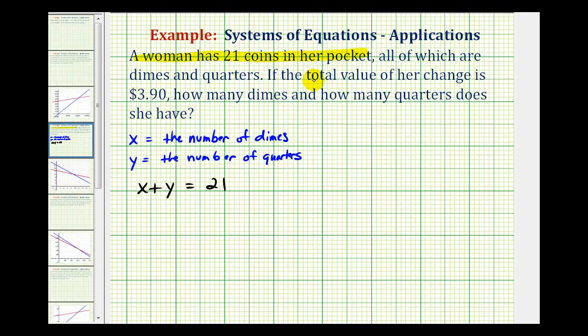Next we're told the total value of the change is $3.90. Well, every dime is worth 10 cents and every quarter is worth 25 cents. So if we write the value equation in cents, we can avoid decimals.